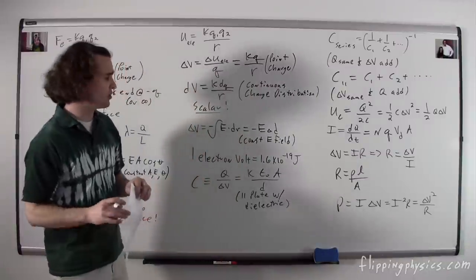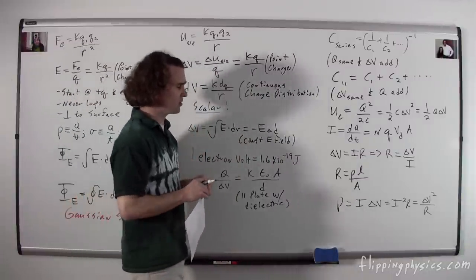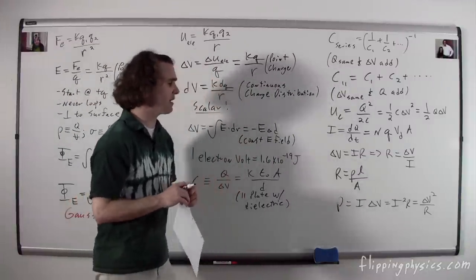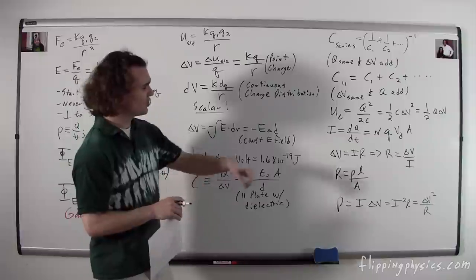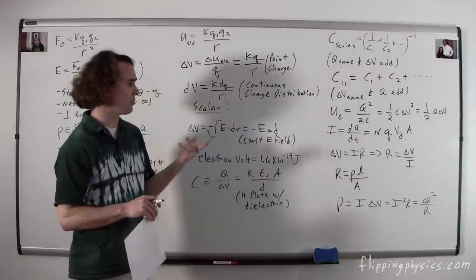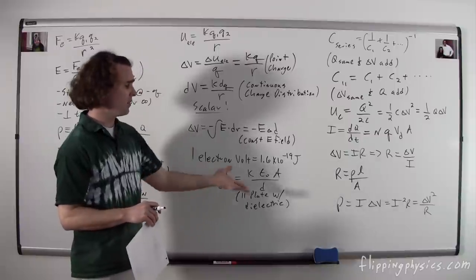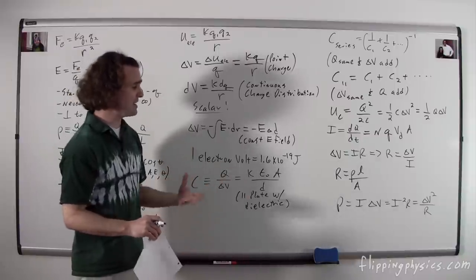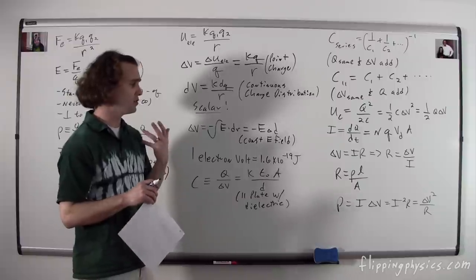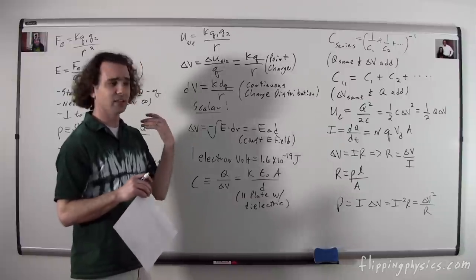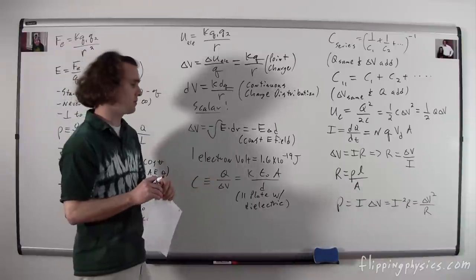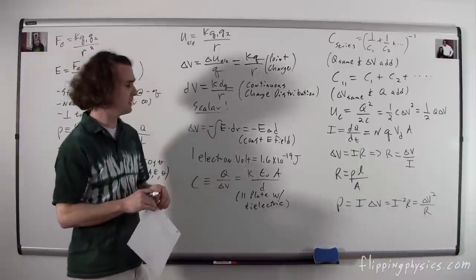Three different equations for electric power: current times electric potential difference, current squared times resistance, and electric potential difference squared divided by resistance. Just like the energy stored in a capacitor, which two quantities you have determines which equation you use. This is the rate at which electric potential energy is being converted to heat, sound, and light, depending on the specific case.